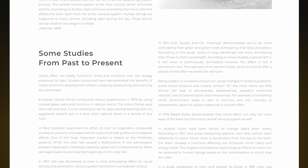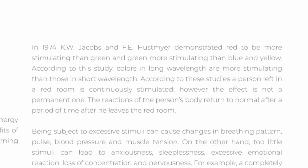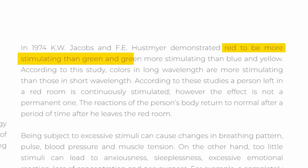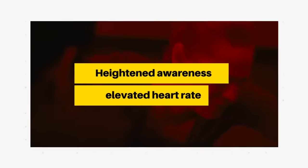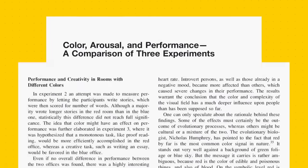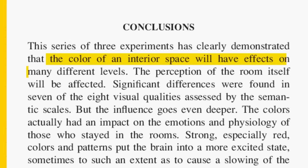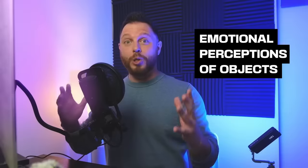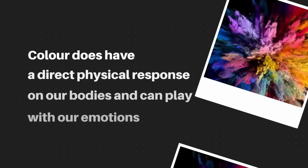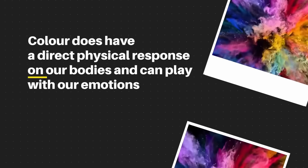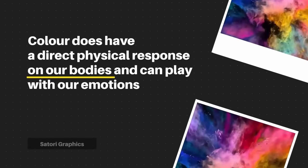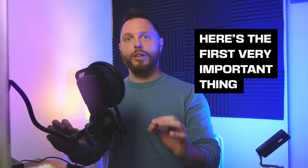In 1974, K.W. Jacobs demonstrated red to be more stimulating than green, and green more stimulating than blue. According to this study, a person left in a red room is constantly stimulated with heightened awareness and elevated heart rate. In 1981, Richard Cooler showed in studies that color had a great effect on EEG readings and heart rate as well as emotional perceptions of objects. So color does have a direct physical response on our bodies and can play on our emotions.